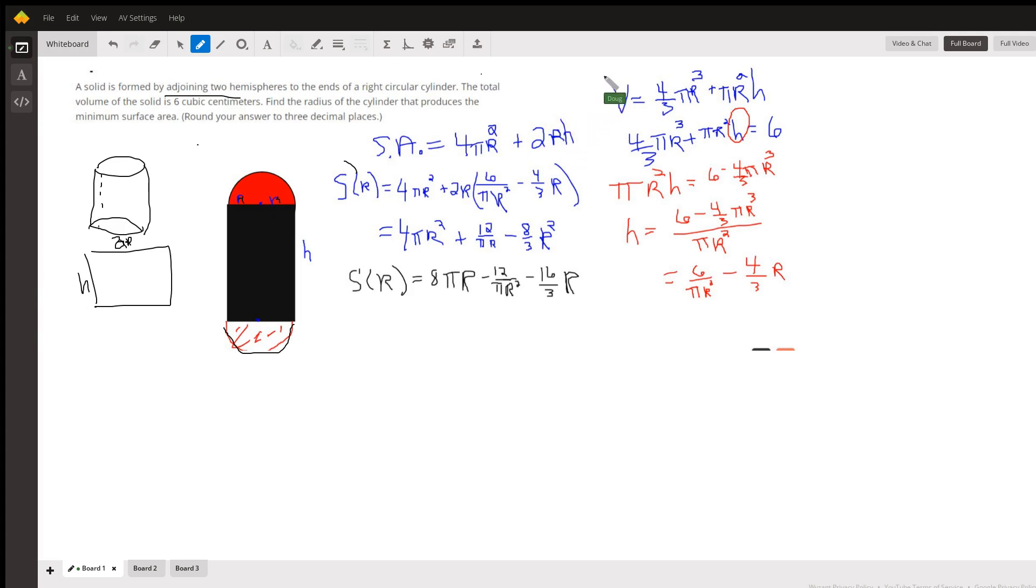Now we want surface area to depend on r, so we have to do something about this h. That's where this constraint comes in. The volume of the solid is six cubic centimeters. So the volume of a sphere is 4/3πr³ and the volume of a right circular cylinder is πr²h.